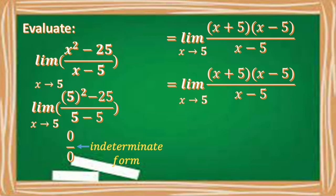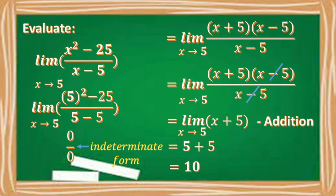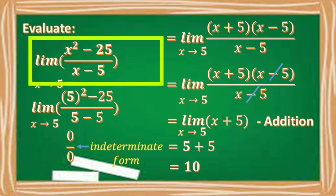And then we can cancel out x minus 5. So what is left is x plus 5. So here we can apply the limit law, which is the addition theorem. So applying the addition theorem, we have 5 plus 5 equals 10. So the limit of the given function, x squared minus 25 over x minus 5, is 10.